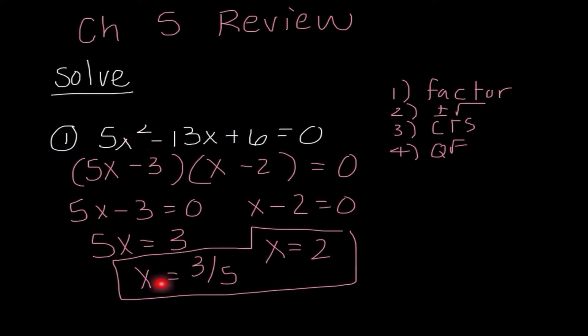I get 5x equals 3, so x is 3 fifths, and x is equal to 2. It should make sense that we have two different solutions, because this is a quadratic function. I would get these two exact same answers even if I used a different method like completing the square or quadratic formula — it would just cause a little more work as I'd have to simplify the answers.